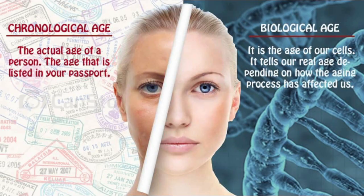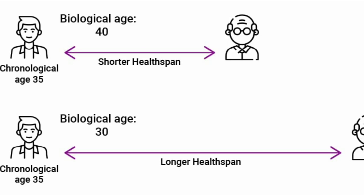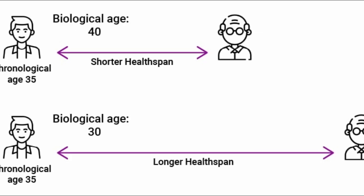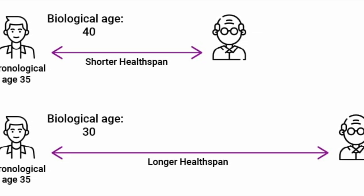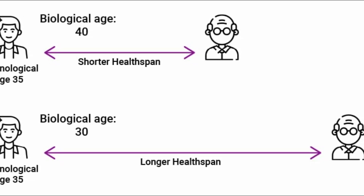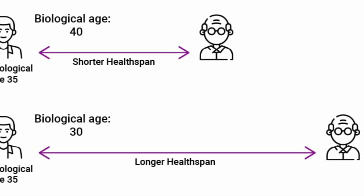Biological age and chronological age are not the same thing. It's why you see people who have looked after their health look fantastic for their age, while someone who has smoked and drunk heavily can look decades older than their chronological age. It has been noted in multiple research articles that individuals with shorter telomeres are more likely to develop various age-related diseases, including cardiovascular disease, diabetes, and neurodegenerative conditions.